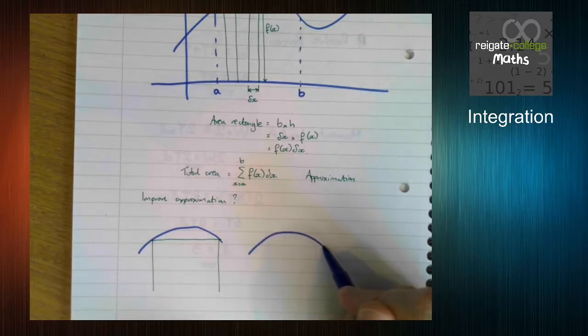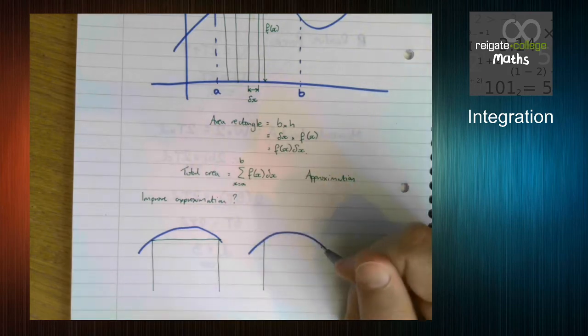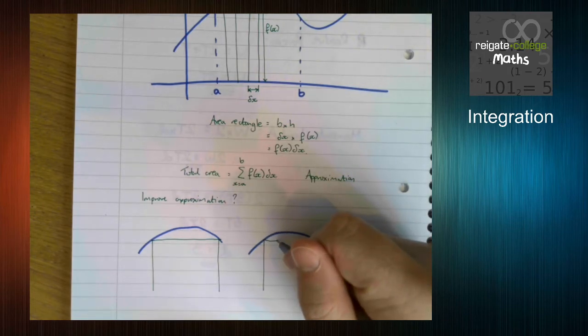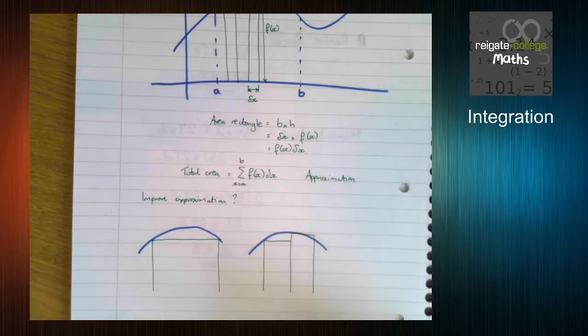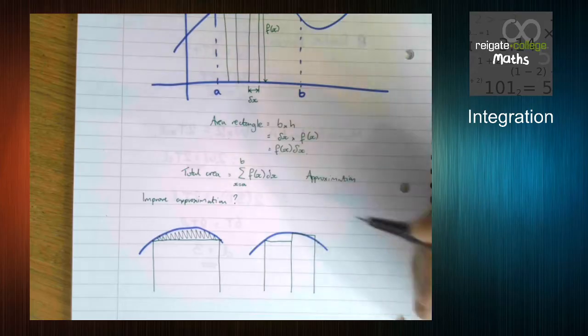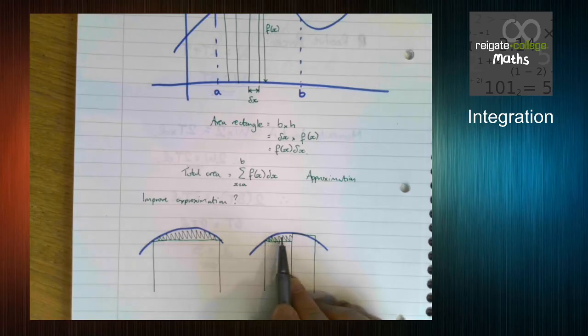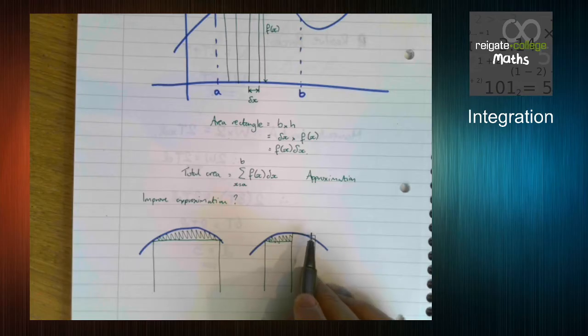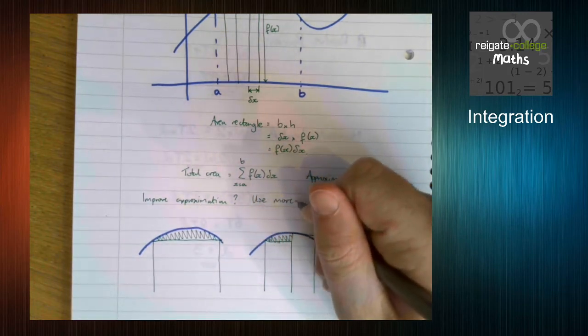But what if we take the same shape, or as best I can draw the same shape, and use two rectangles? If we take the same shape here, you can see the amount that we're approximating that's wrong is slightly less, because we've got this smaller area underneath here and a little bit over the top. So we're going to take off this bit as well. So to improve our approximation, we use more strips. Use more rectangles.